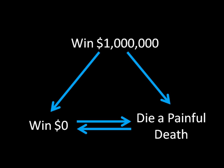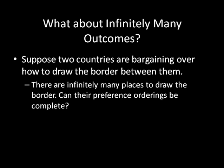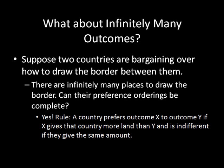These were just three outcomes. It's pretty easy to draw preference relations between three outcomes, or even any finite number. But what if we deal with infinitely many outcomes? The example I'm giving here is two countries bargaining over how to draw a border between them — there are actually infinitely many places to draw that border. Can this preference ordering be complete? The answer is yes. We just have to get creative: if a country prefers outcome x to y when x gives more land than y, and is indifferent when they give the same amount, you've created a rule that generates a complete preference relation despite infinitely many outcomes.